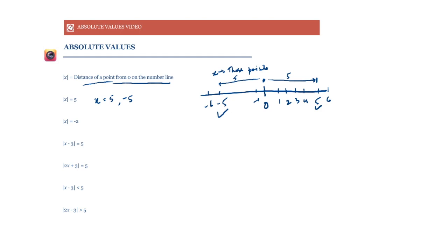How would we plot mod x = -2? Well, x should be at a point whose distance from 0 is minus 2. But can distance be negative? It cannot. So that is why this is not possible. Mod x is always greater than or equal to 0 — it will always be 0 or a positive number, never negative. That is pretty much what absolute value is: it gives you the magnitude of x. Whether x is 10 or minus 10, in both cases its magnitude is 10.